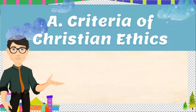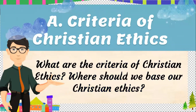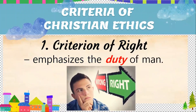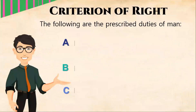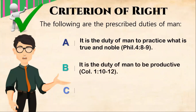What are the different criteria of Christian ethics? Where should we base our Christian ethics? The first one is the criterion of right. It emphasizes on the duty of man. It is the duty of man to practice what is true and noble, as found in Philippians 4, verses 8-9. It is the duty of man to be productive, as found in Colossians 1, verses 10-12.